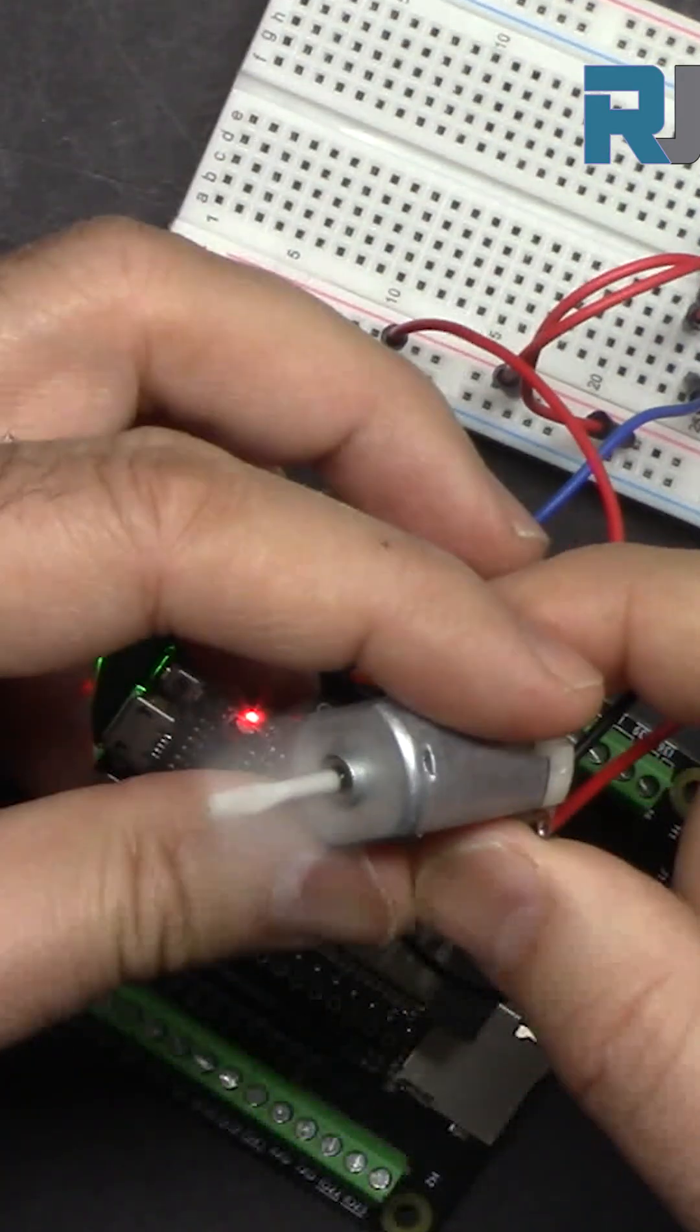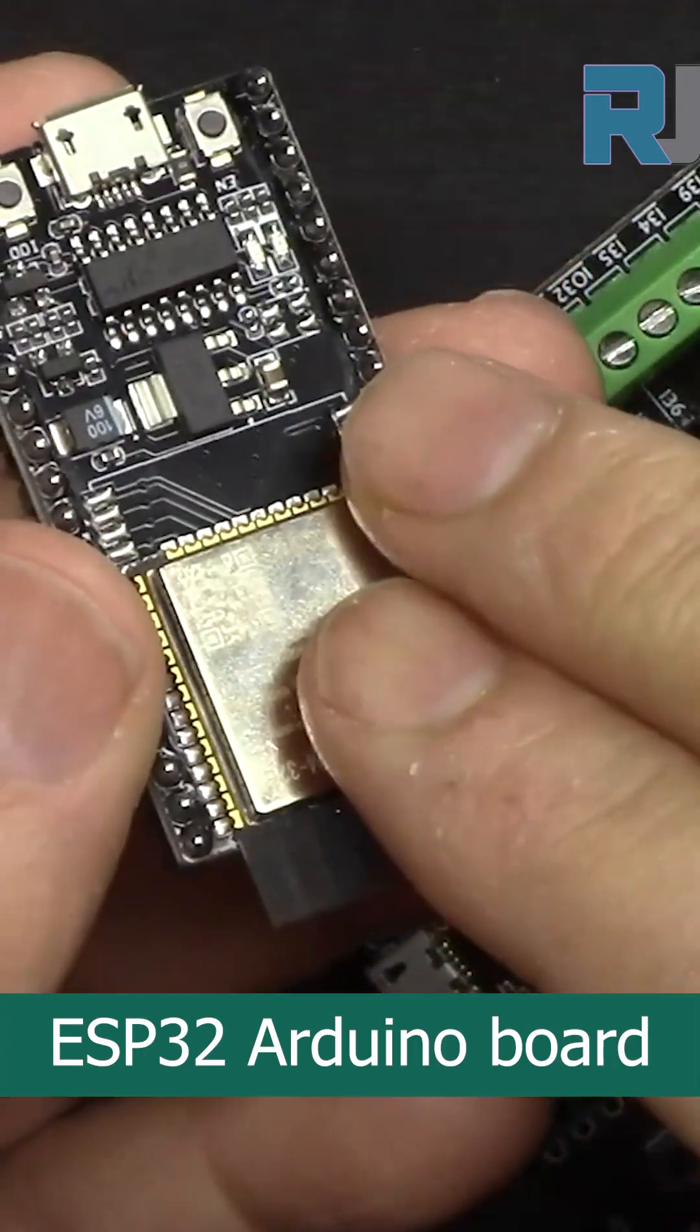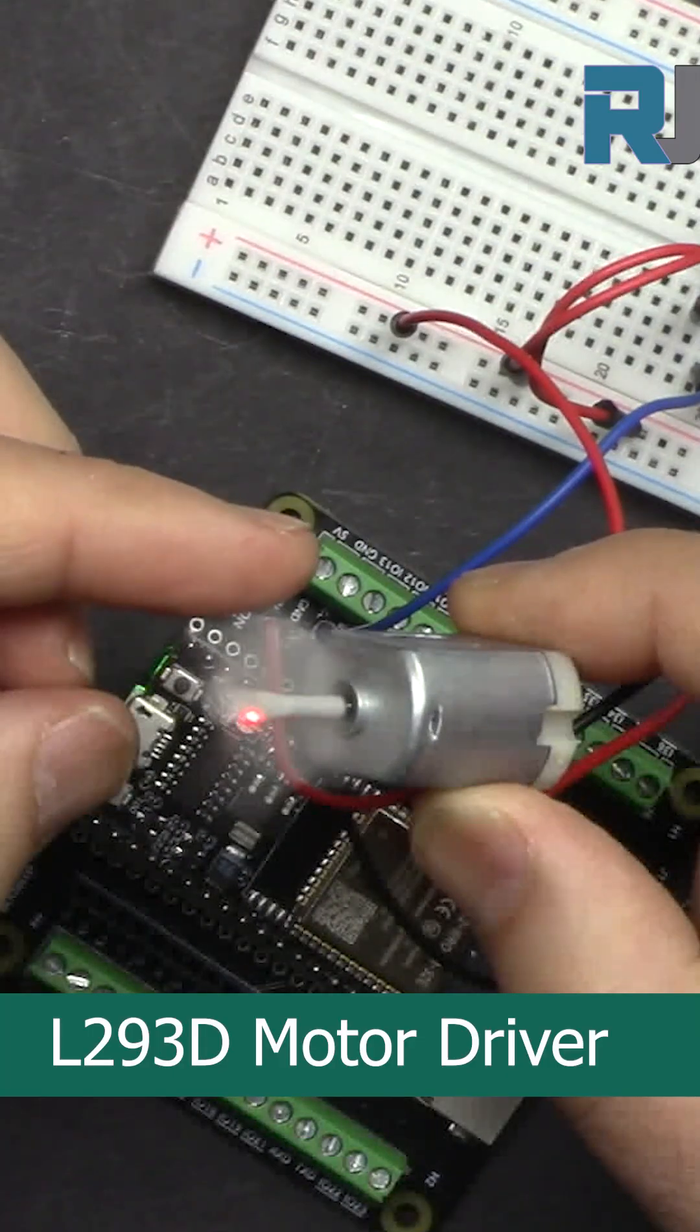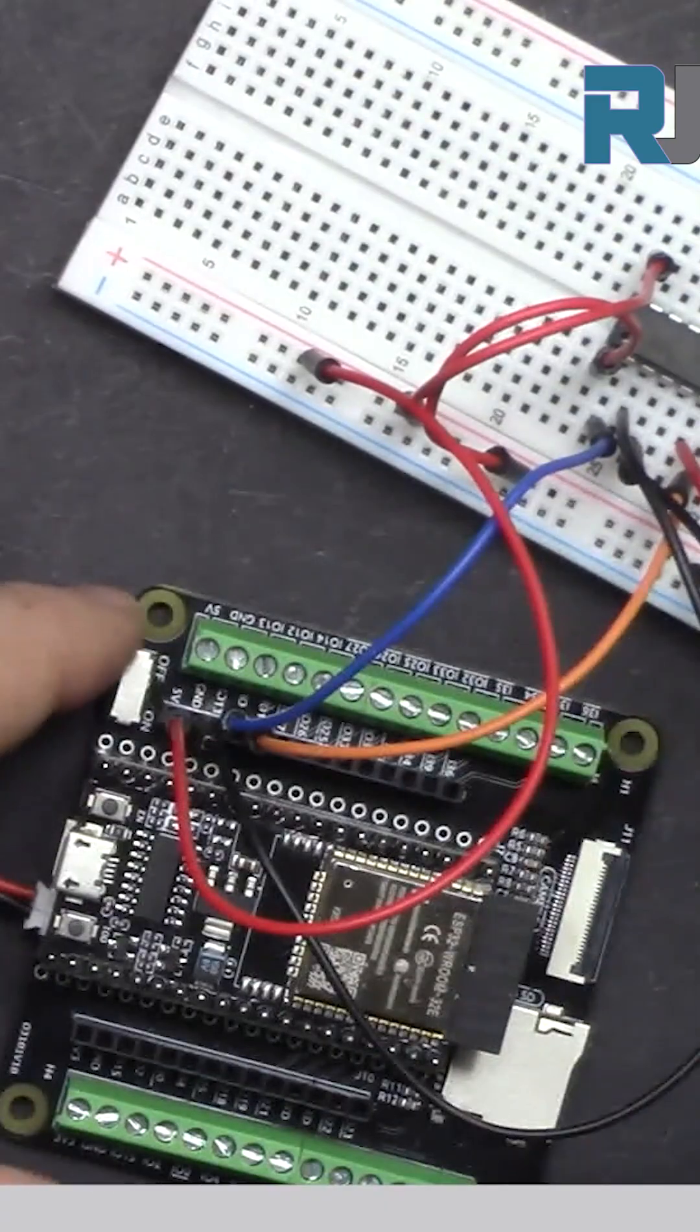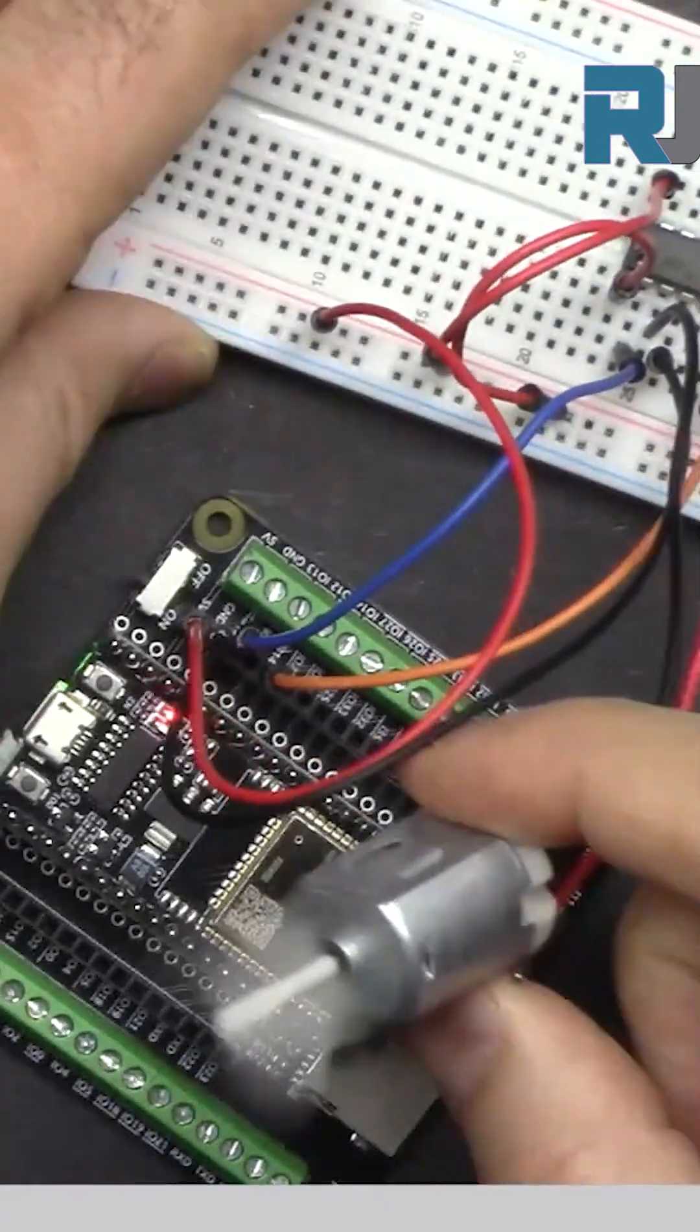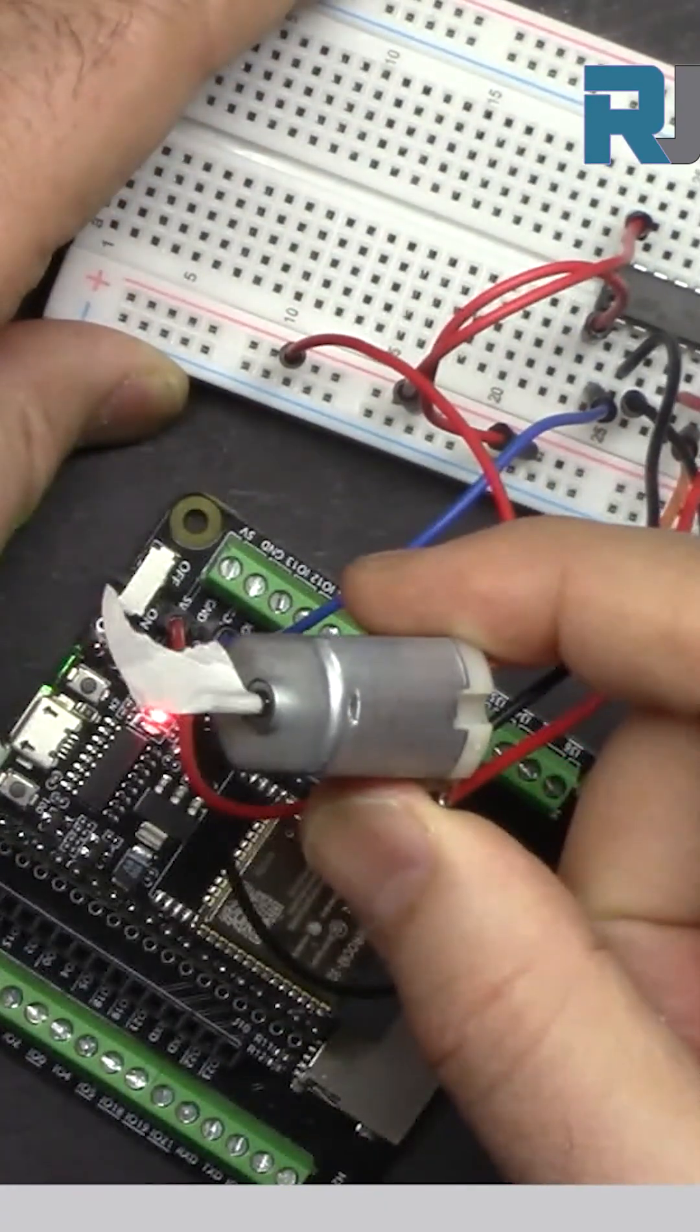We can control DC motor easily using ESP32 and L293D motor driver. Here I have connected a DC motor to ESP32 Arduino board.